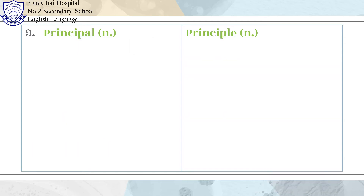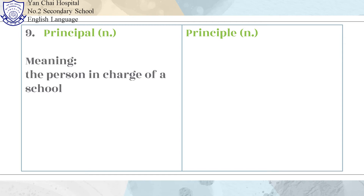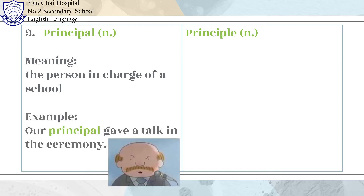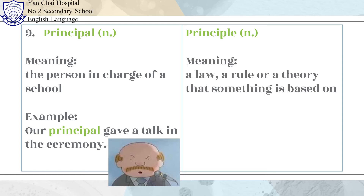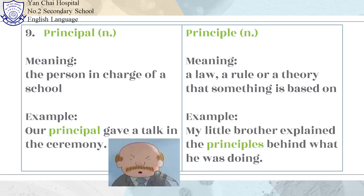Number 9: Principal and Principle. Principal means the person in charge of a school. Example: Our principal gave a talk in the ceremony. Principle means a law, a rule, or a theory that something is based on. Example: My little brother explained the principles behind what he was doing.